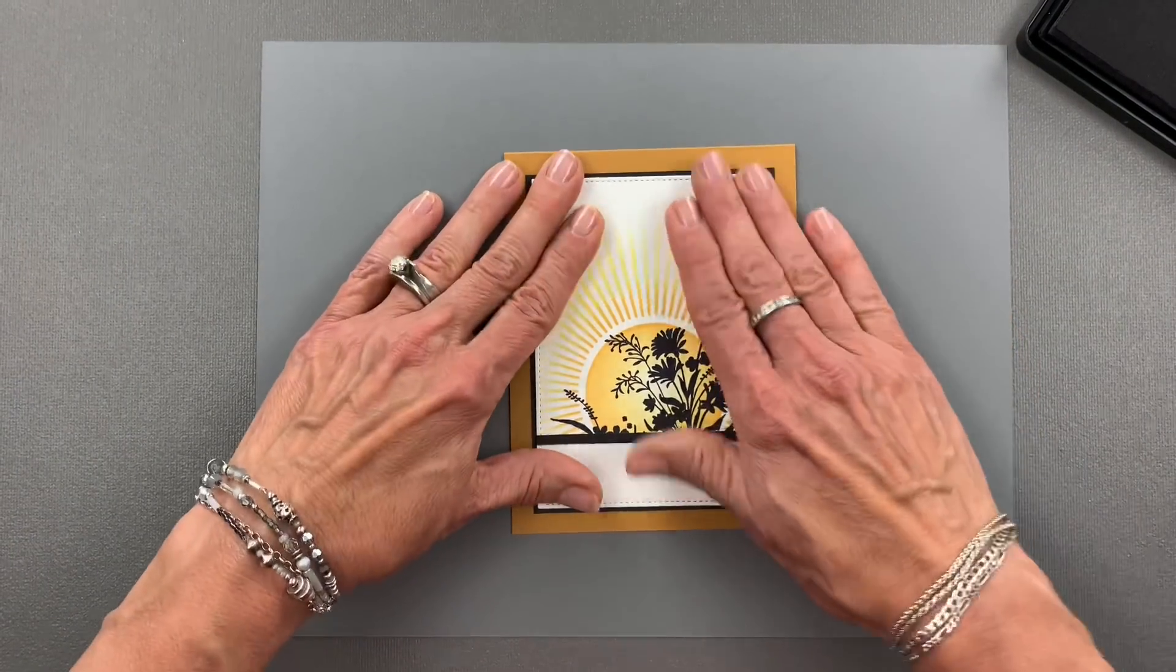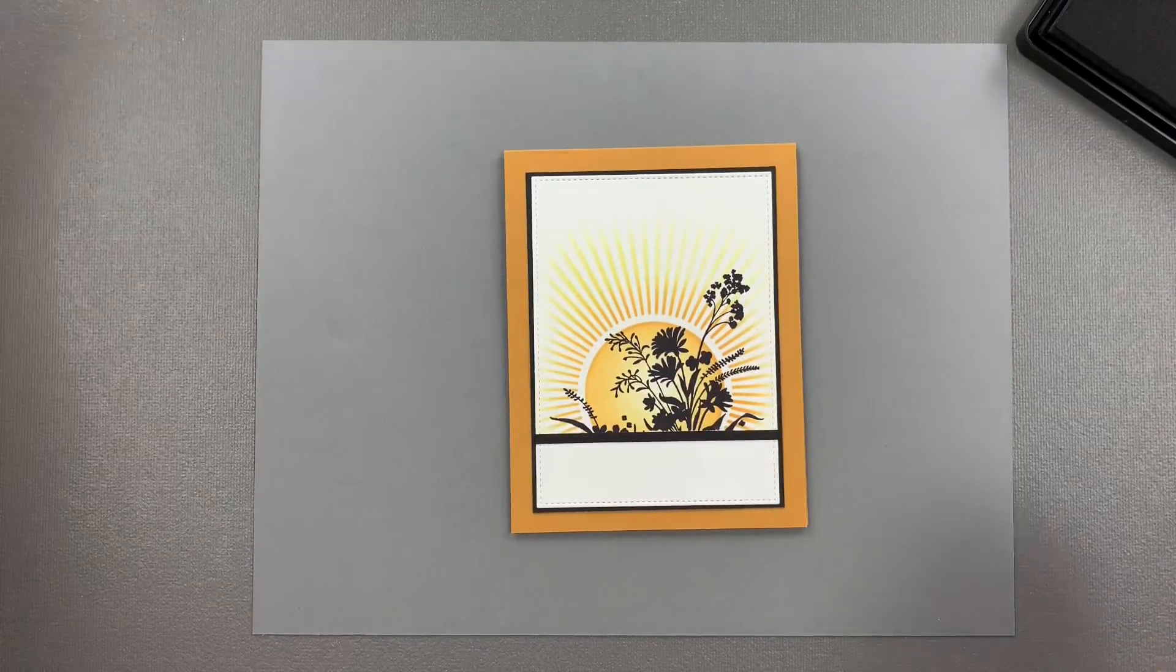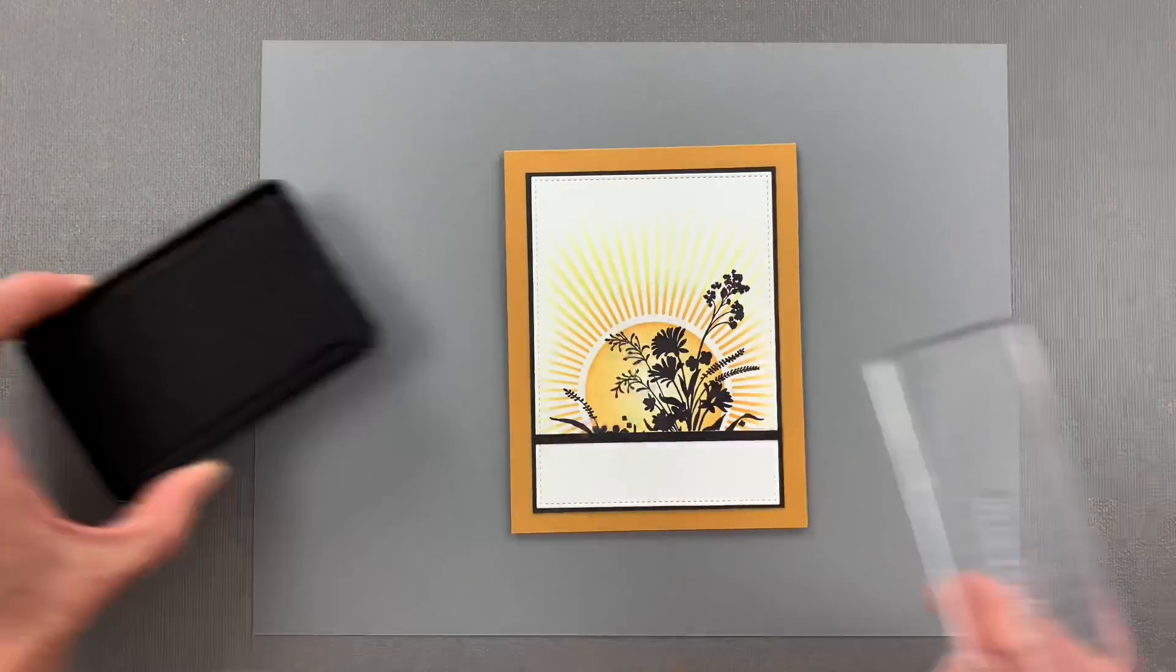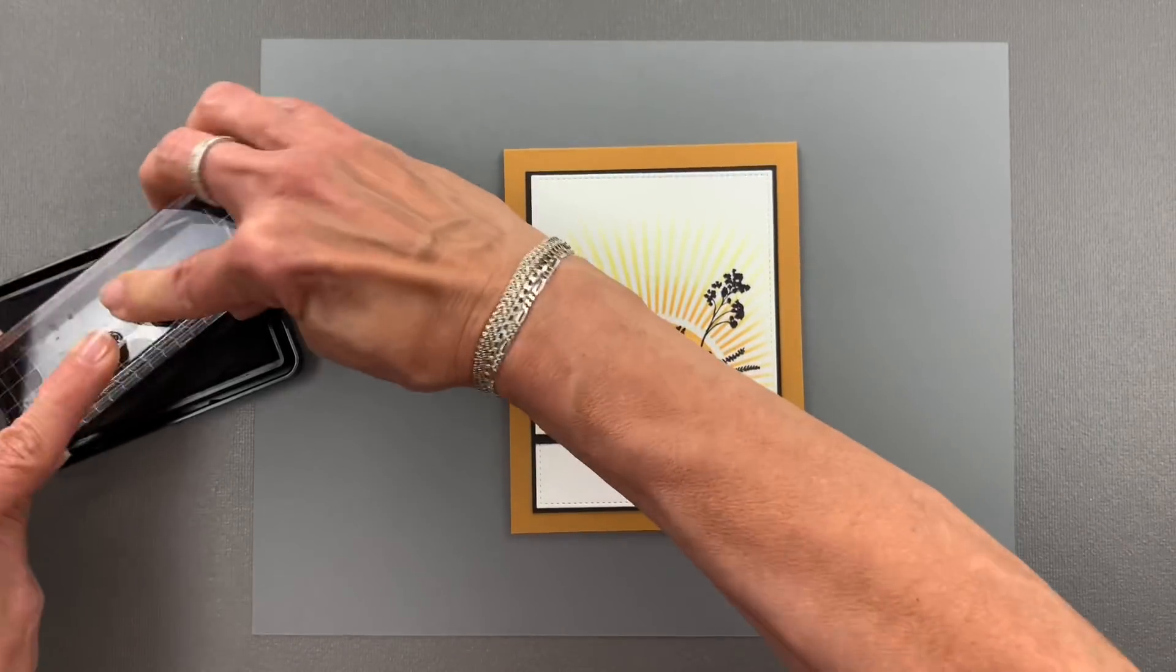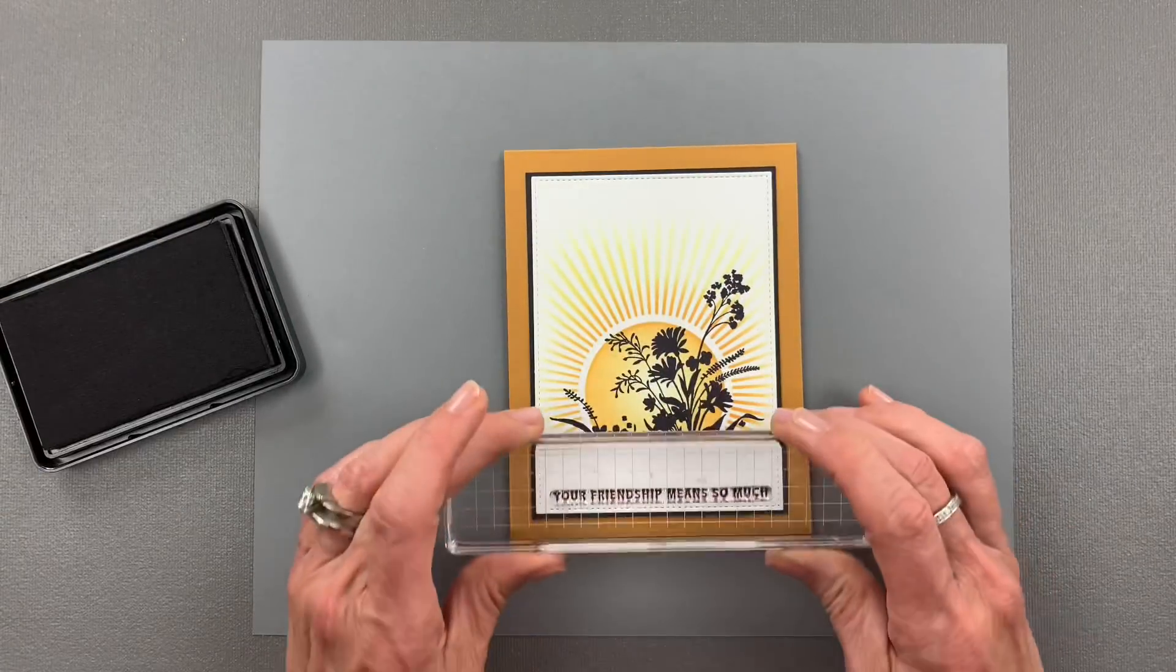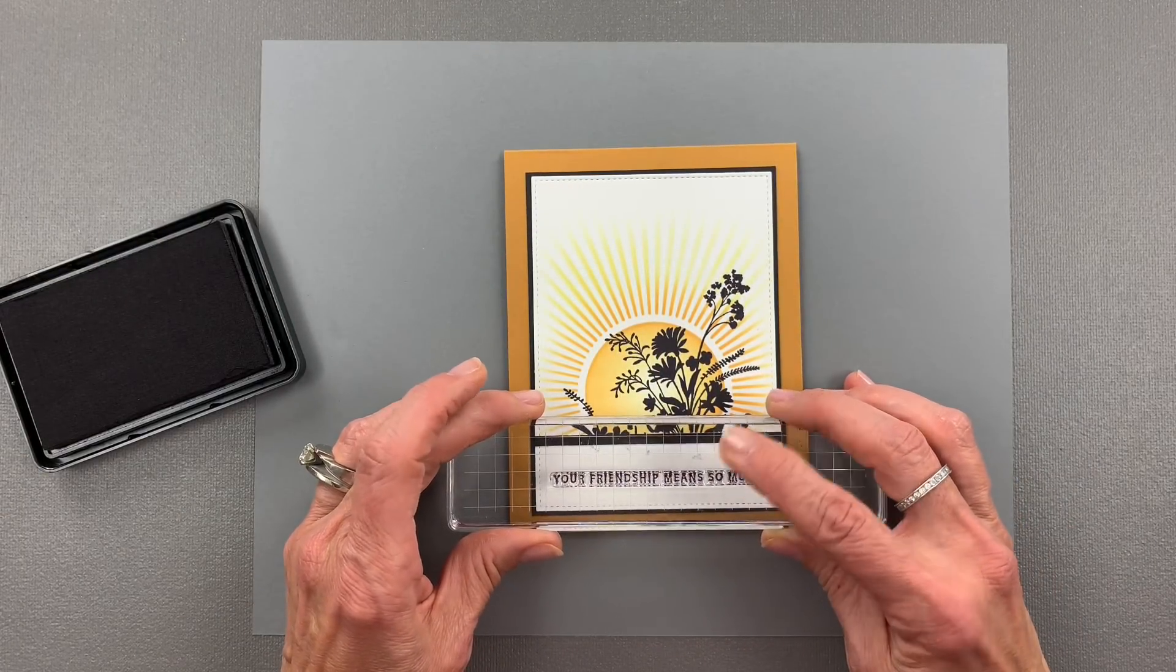Then I'm going to finish this card off with one of the greetings from the Spring Tulip stamp set. This is one of my favorite greetings. It's Your Friendship Means So Much. And I'm going to stamp that right in the center of that open space.